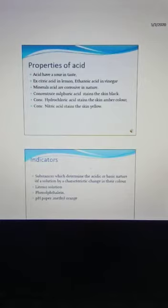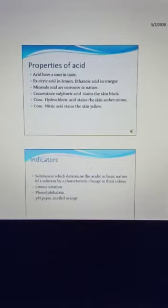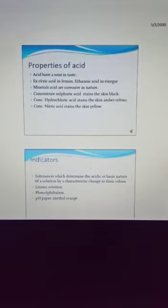Next is Indicators. Indicators are substances which determine the acidic or basic nature of a solution by a characteristic change in their color. Examples of indicators include litmus solution, phenolphthalein, and methyl orange.